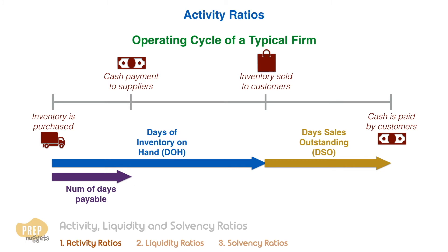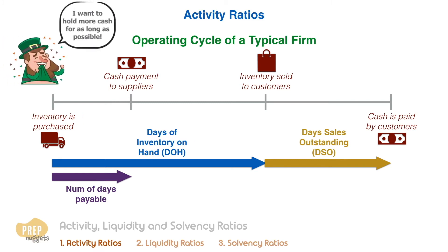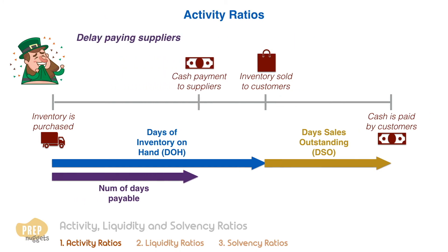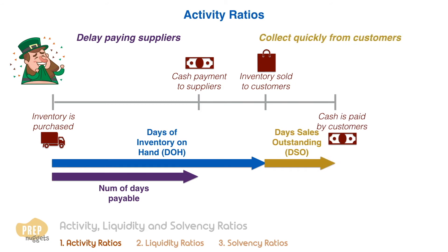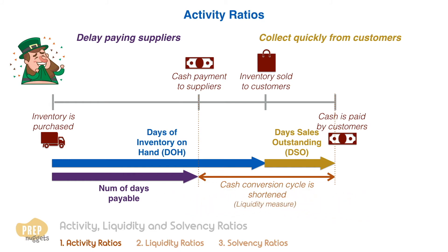Now imagine you're the business owner — what would you prefer? You would likely want to hold more cash for as long as possible. As such, you'll want to delay paying suppliers for as long as possible and collect money from your customers as quickly as possible. This has the effect of shortening the cash conversion cycle, which is a liquidity measure that we shall discuss later.